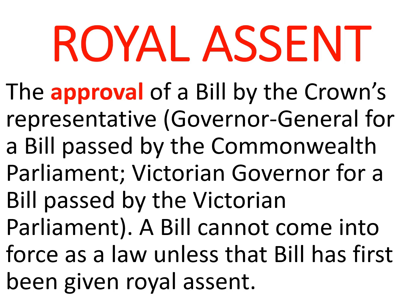A bill cannot come into force as a law unless it has first been given royal assent. As a matter of practice, the Governor-General or Governor will always give royal assent to a bill passed by Parliament — so never suggest the Crown's representative might refuse. Also, when defining royal assent, make sure to describe it as the Crown's representative approving the bill, not passing it. Parliament passes bills; the Crown's representative approves them. Find the term 'royal assent' in your vocabulary sheets and write in this definition.